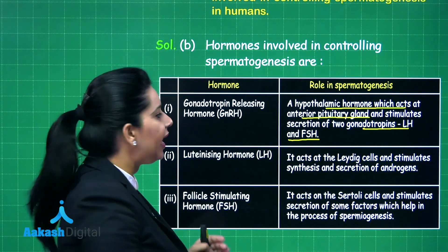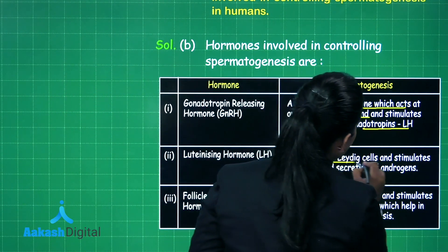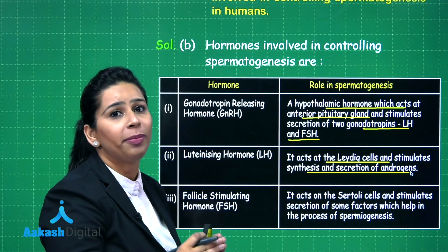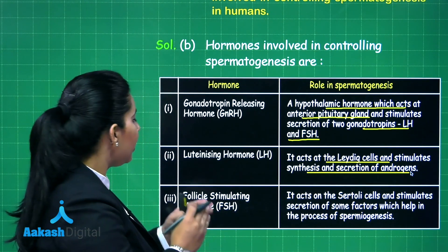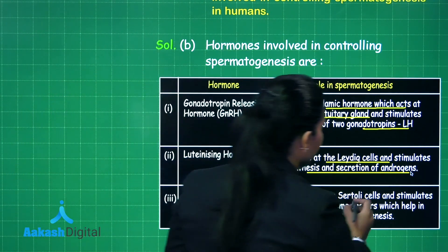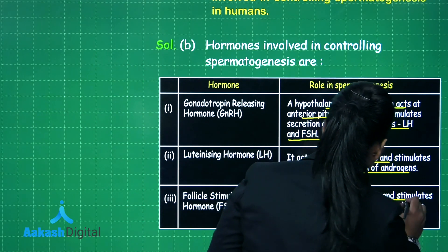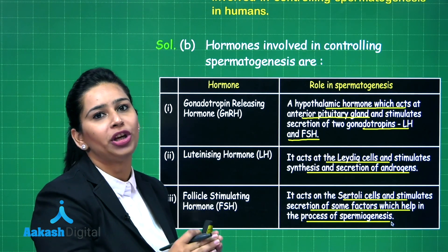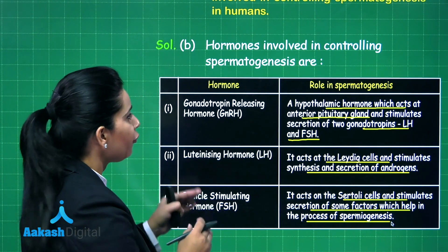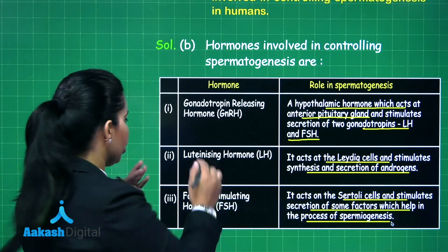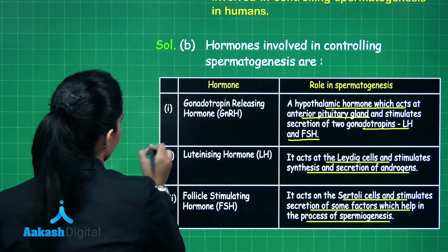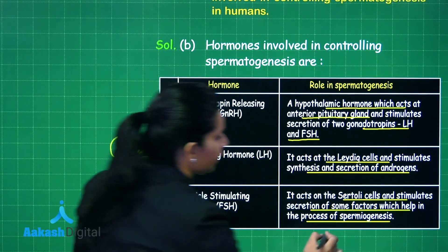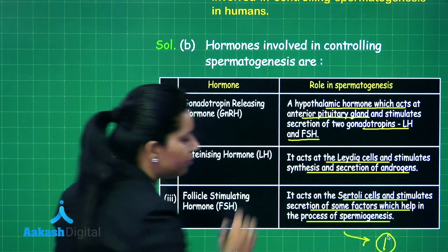The second hormone LH acts at the Leydig cells and stimulates the synthesis and secretion of male sex hormones, that is androgens. Third, FSH is responsible for stimulating Sertoli cells to secrete some factors that help in the process of spermiogenesis. If you name the hormones you will get one mark, and if you state the functions you will get another one mark.